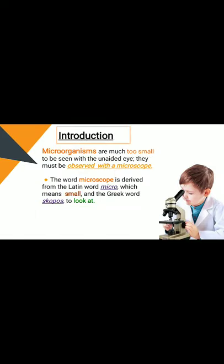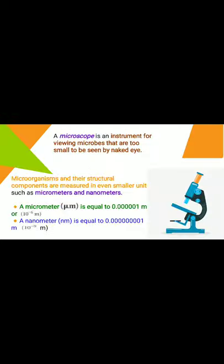As we know, microorganisms are too small to be seen with the unaided eye, so they must be observed with a microscope. The word 'microscope' is made up of two words: the Latin word 'micro,' meaning small, and the Greek word 'scopos,' meaning to locate. Without a microscope, we are unable to look at bacteria or study their structure. A microscope is an instrument for viewing microbes too small to be seen by the naked eye, and the science of investigating small objects using such an instrument is called microscopy.